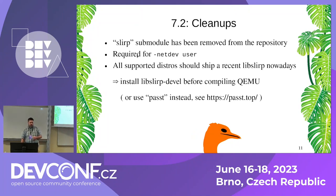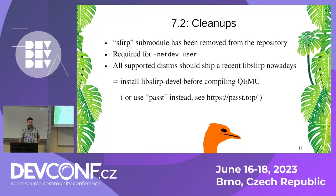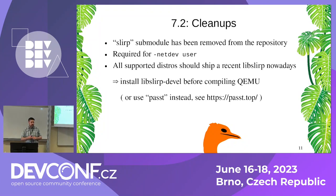And again, cleanups. In 7.2, we removed the so-called Slirp submodule from the repository. This doesn't mean we removed the feature — it just means we removed the bundled code. For historical reasons, QEMU shipped the Slirp code in its own repository and in the tarballs. But in recent years, all Linux and other distributions brought up and supplied this Slirp code as a properly packaged library. The takeaway here is: please install libslirp-dev before you compile QEMU if you still want to use -netdev user for configuring your network backend.